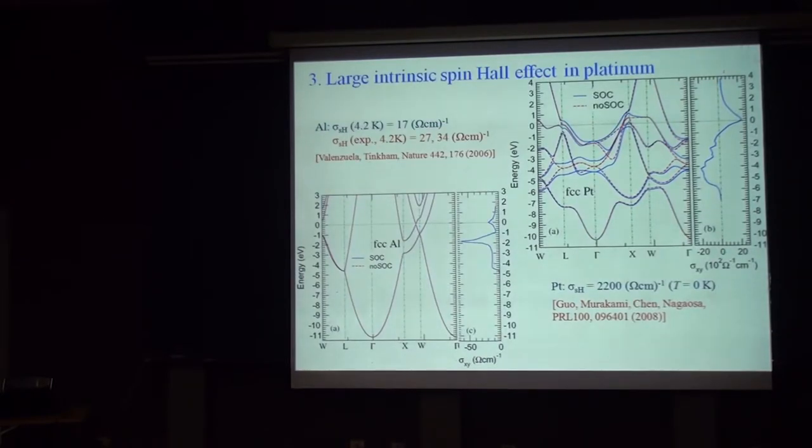Now, as I mentioned before, for spintronic application, it's more important to study metals. Not only it has a larger room temperature conductivity. It also is more robust. So, and then I moved this formalism and applied it to aluminum and platinum.